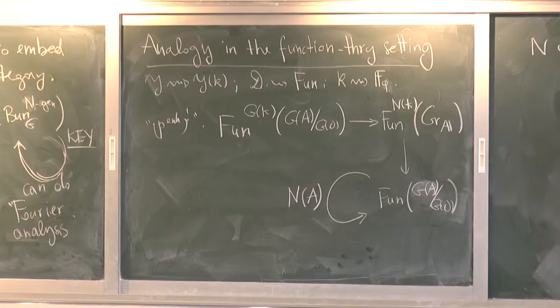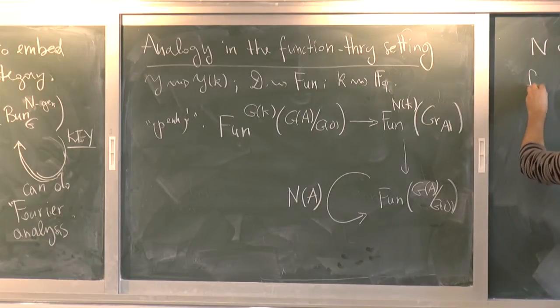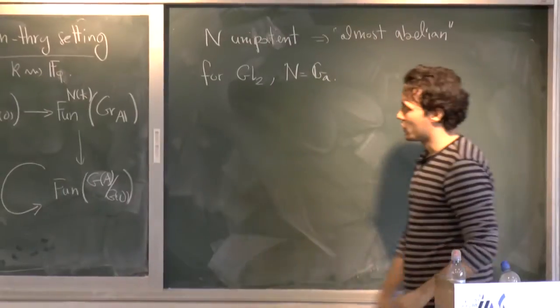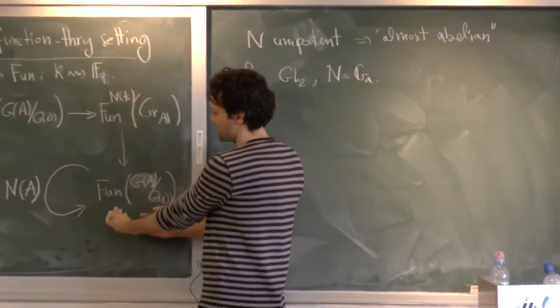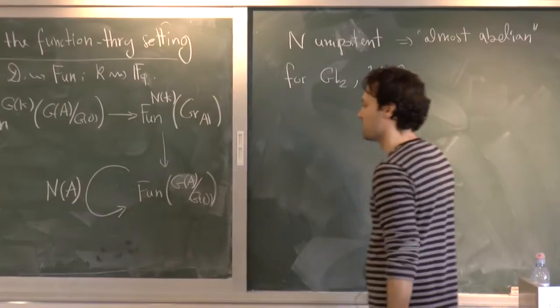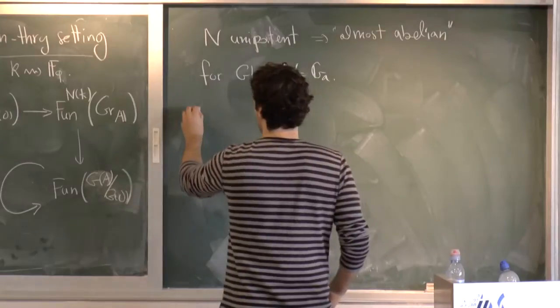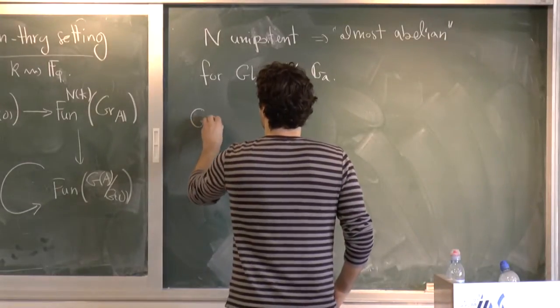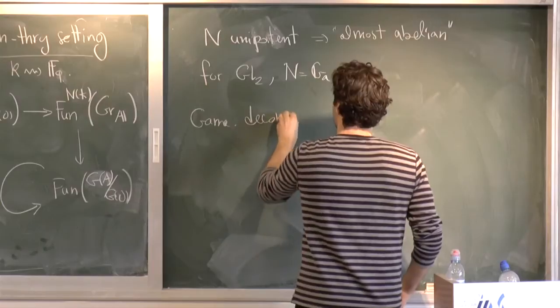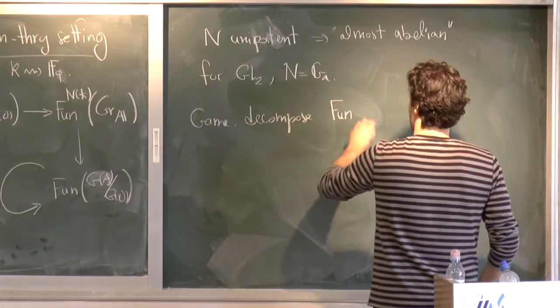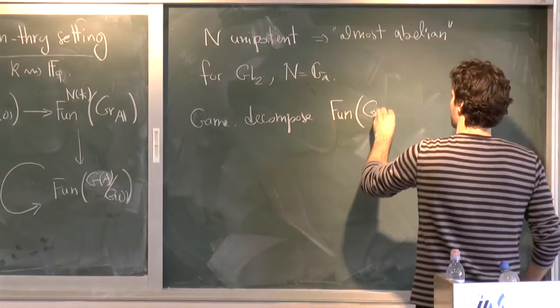But for now, let's study the case where N is exactly abelian. So for GL2, N is just the additive group, G_a. That's abelian. And so I want to now decompose this as a representation of A according to Fourier characters.